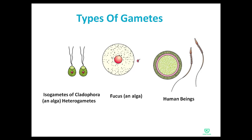Since both gametes are similar, they are called isogametes. In the alga Fucus, you can see heterogametes — they are morphologically different. The third example is human beings, where you can see the ovum as the female gamete.